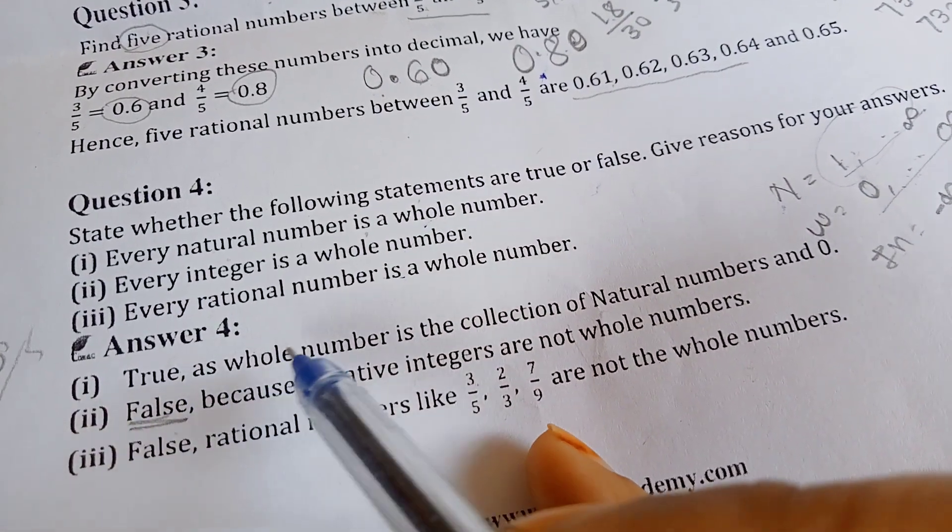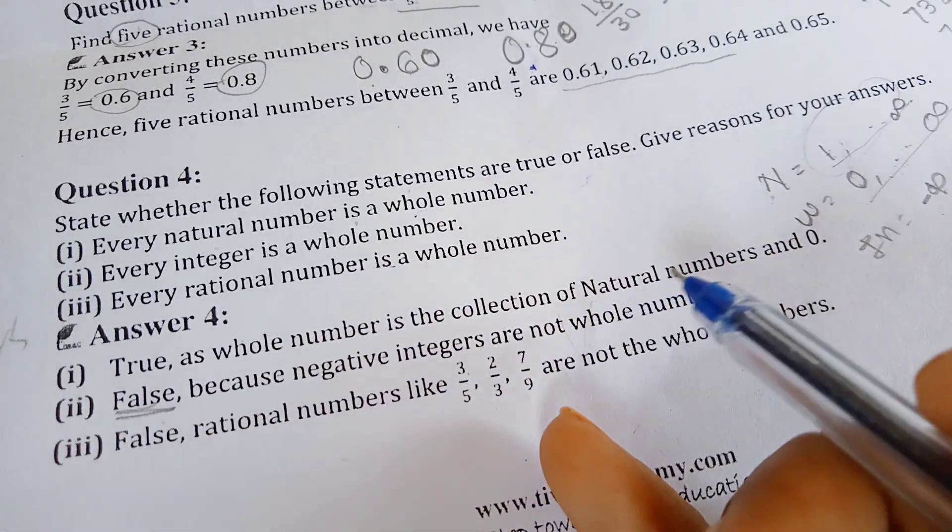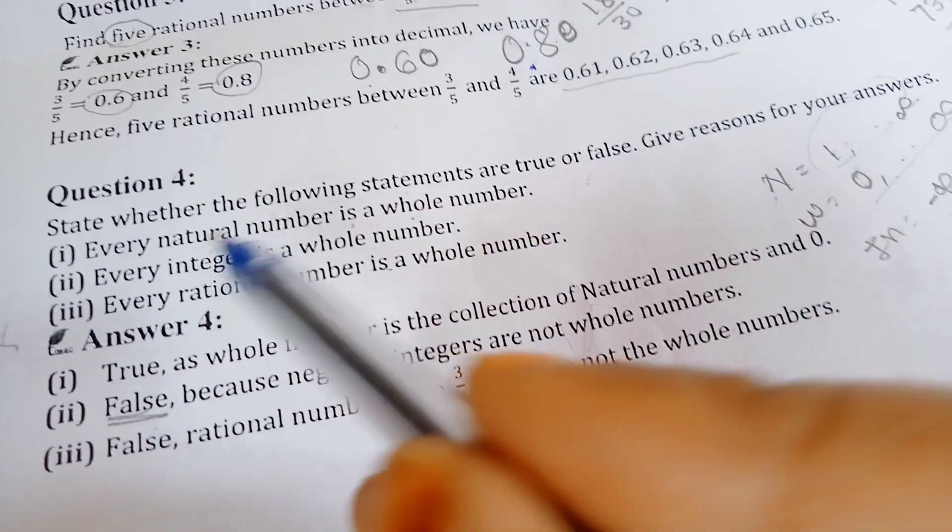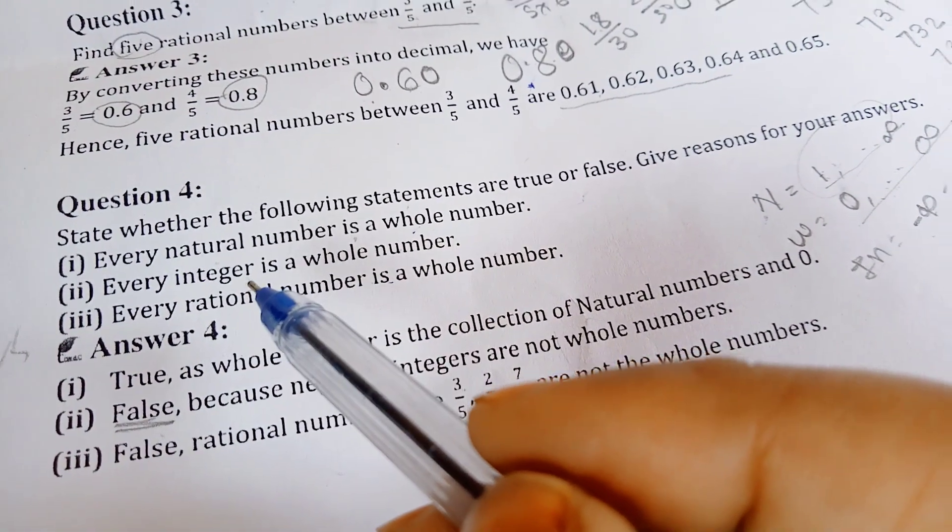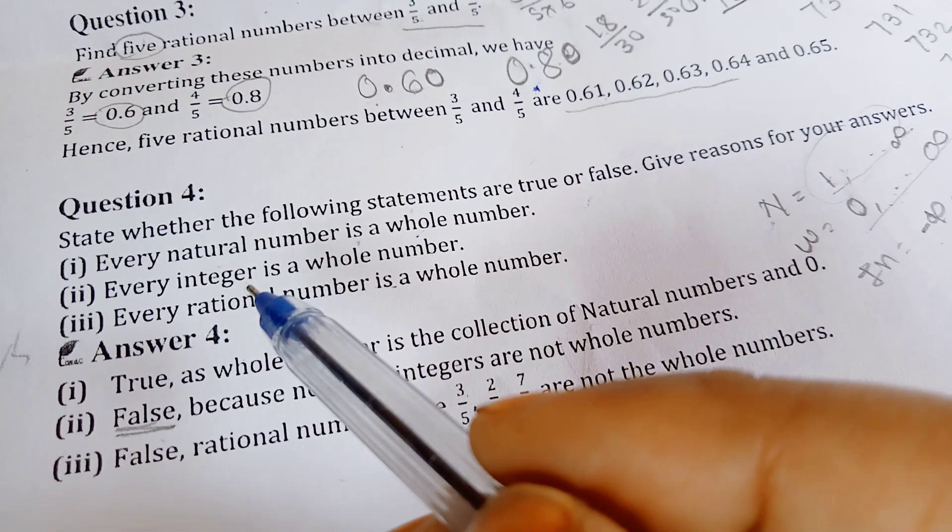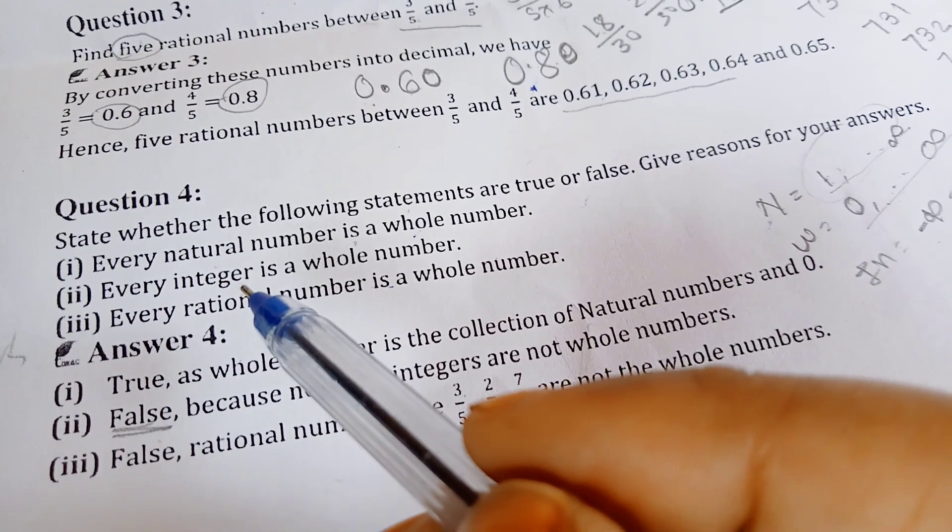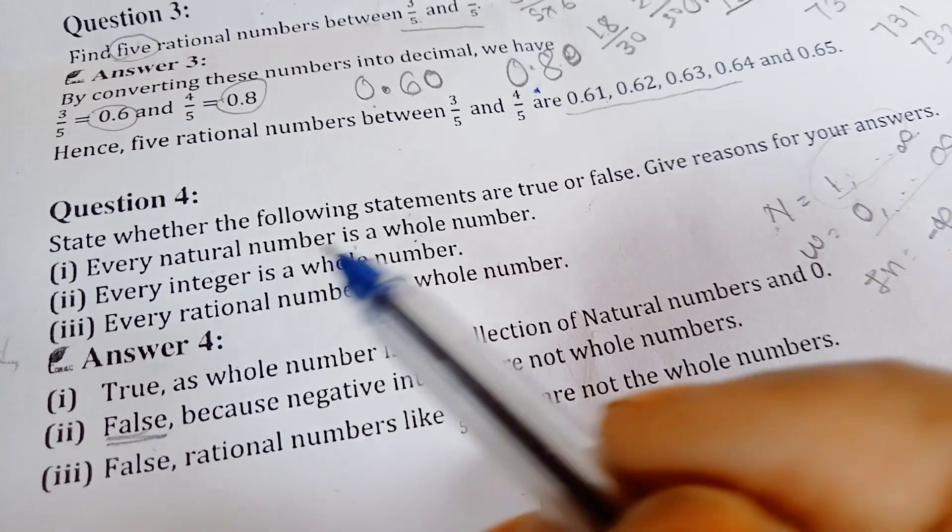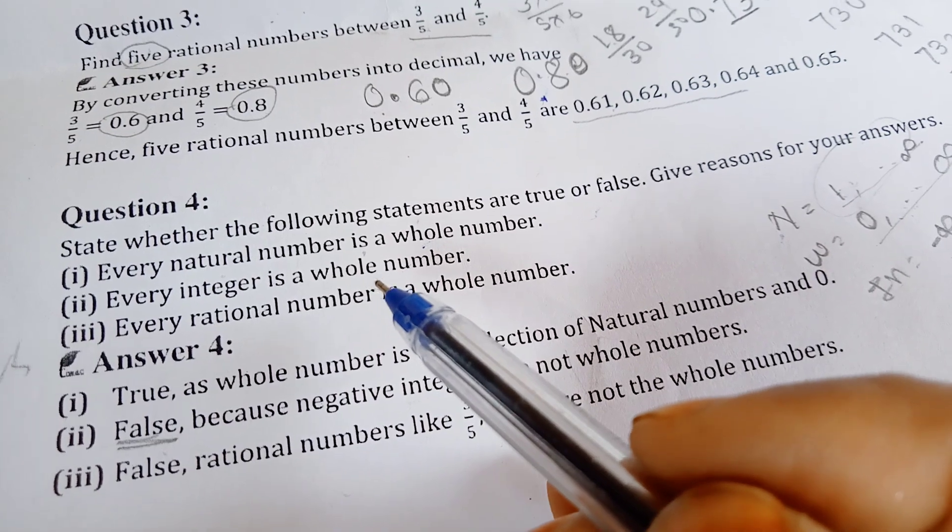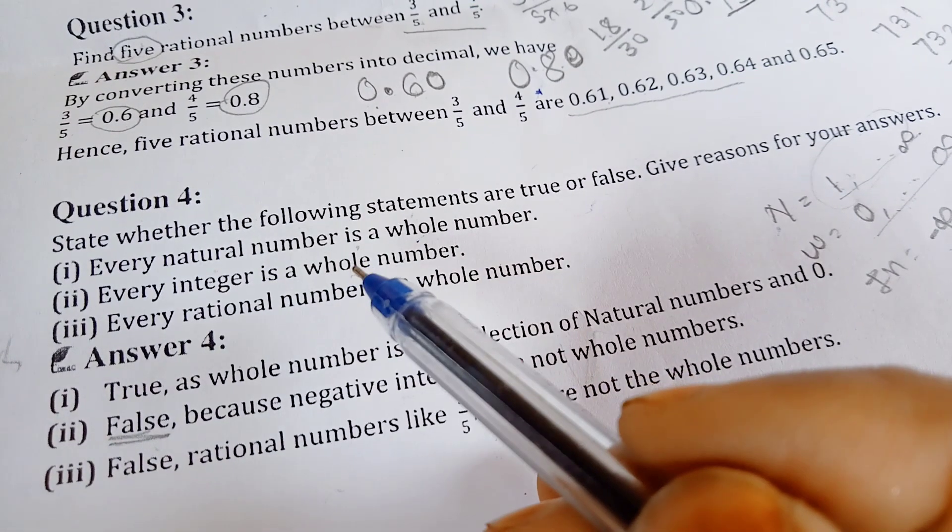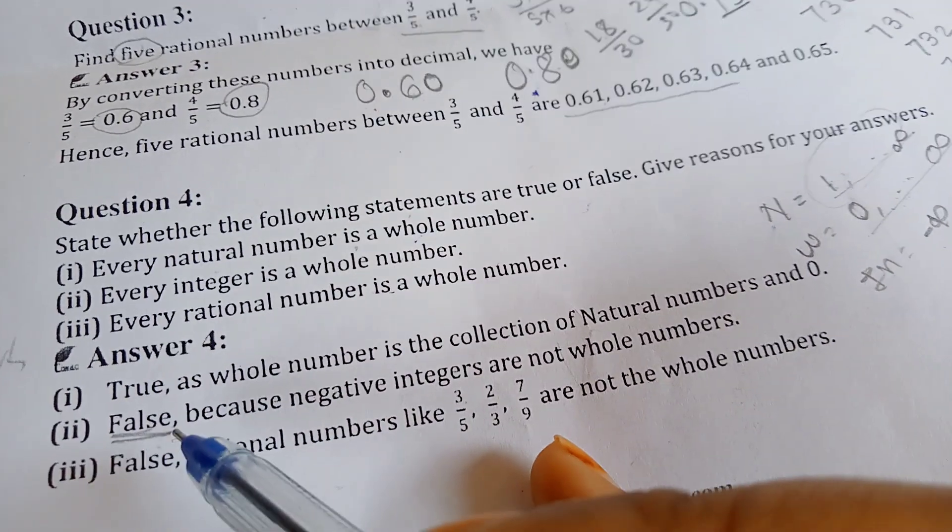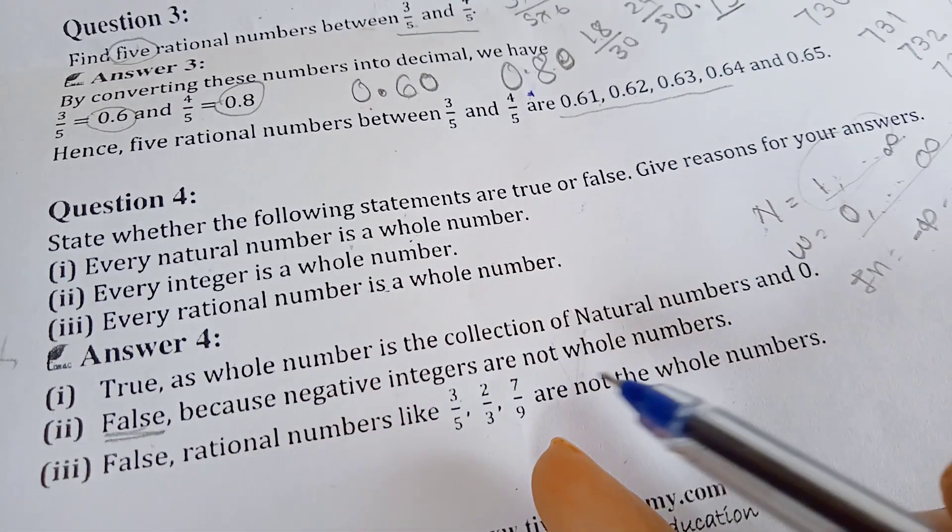Second question is, every integer is a whole number. If we remember the definition of integer, we have said negative numbers, 0, and positive numbers. And whole numbers are 0 to positive numbers. So, you can tell me, are all integers whole numbers? No, it is False. False, because negative integers are not whole numbers.